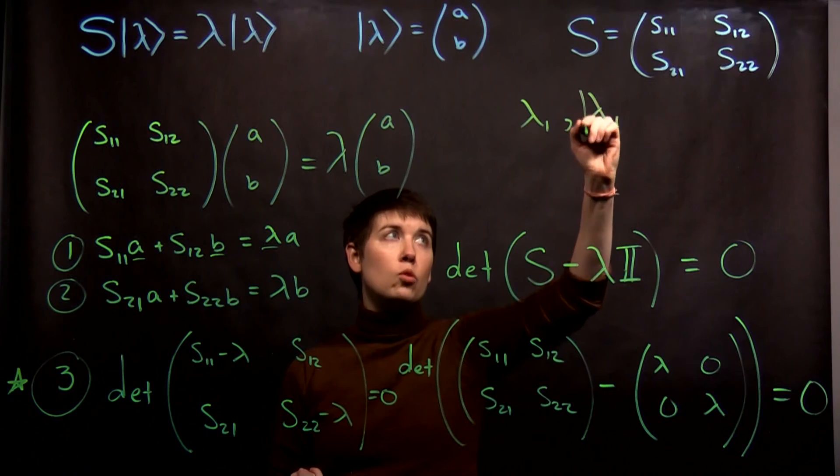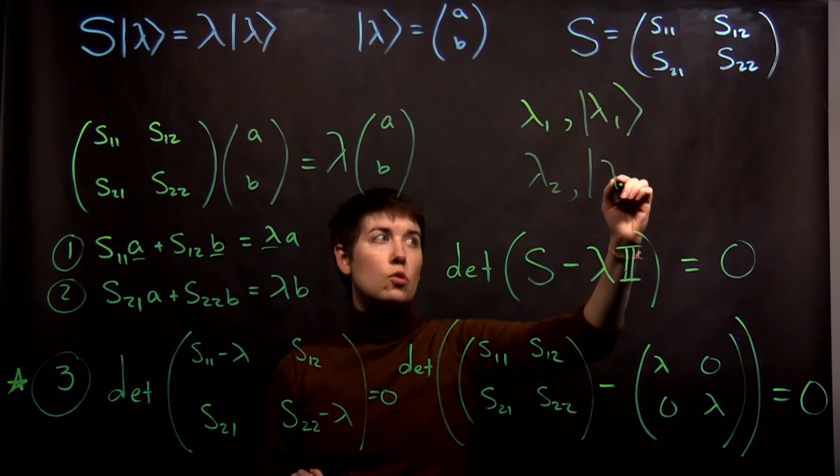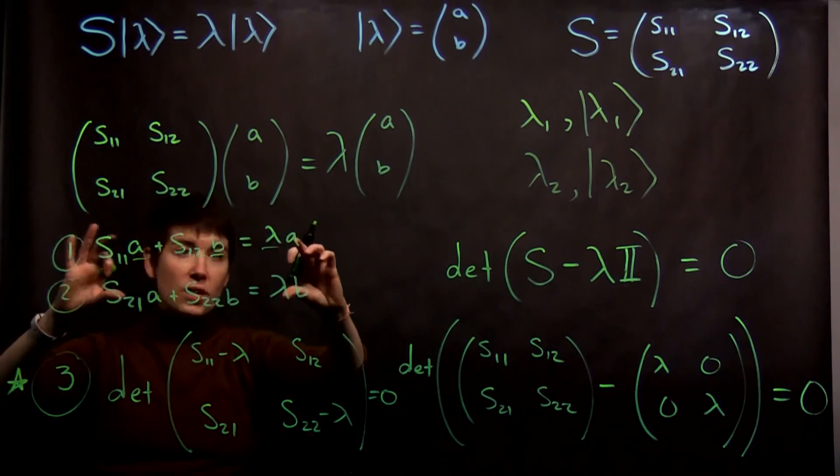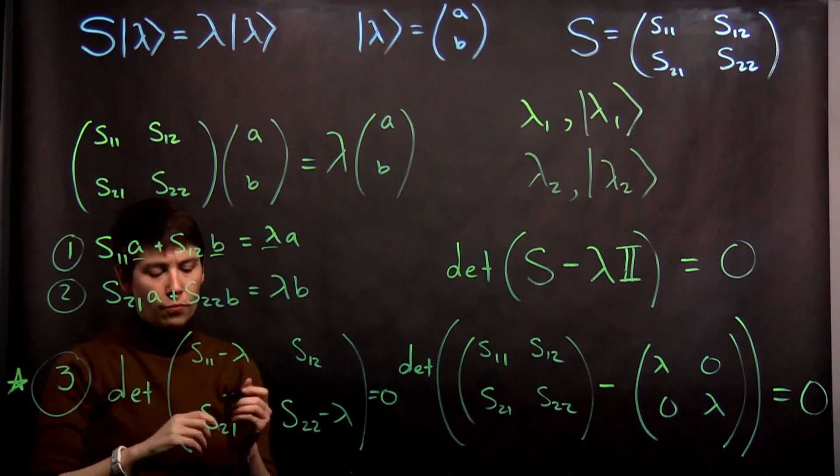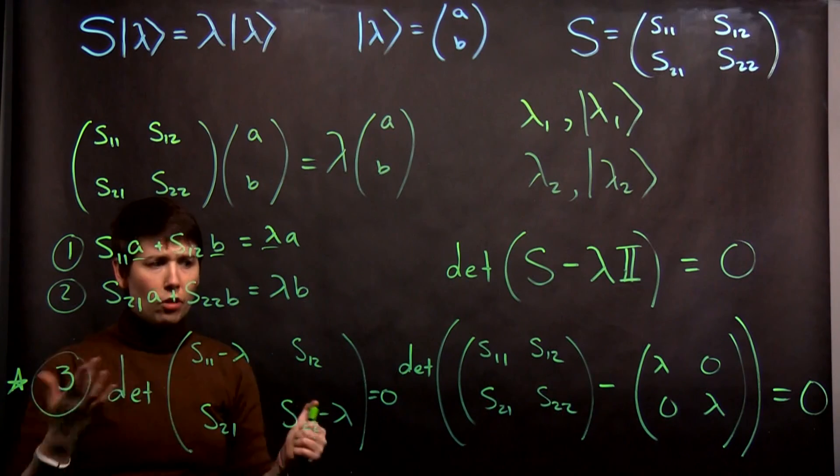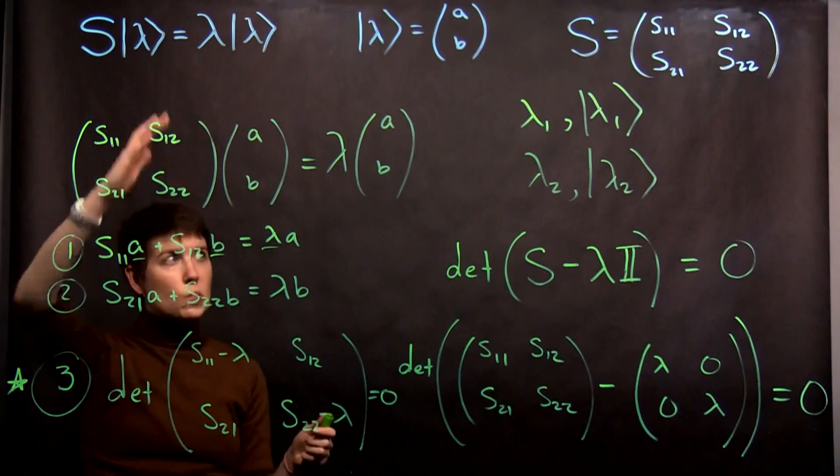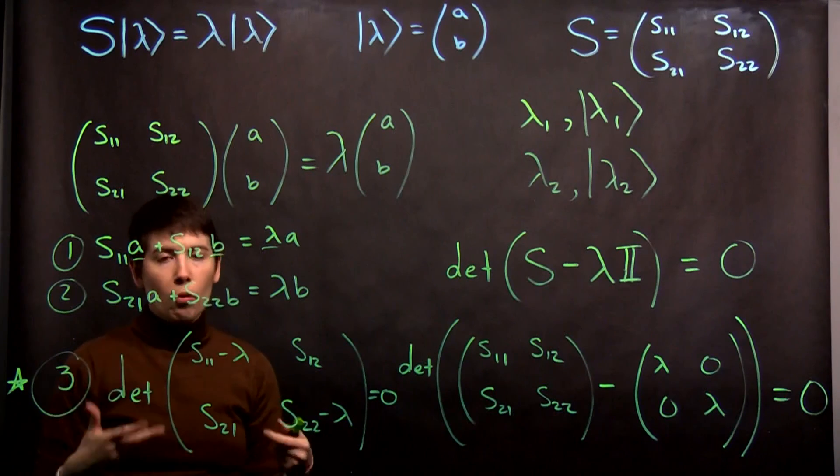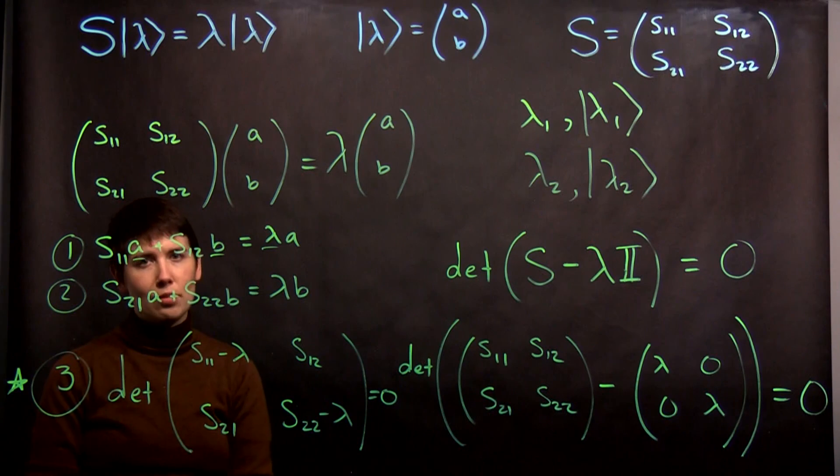Remember that in this case you're actually going to have lambda one and lambda one state, lambda two, and then your lambda two state. So you're actually going to repeat this twice for two different values of lambda, if it's a two by two. There will eventually be some examples of this, but this is a process that is important to get used to, especially if you haven't had linear algebra before or never felt comfortable doing this.